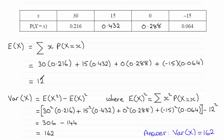And obviously, E(X), when you square it, when you square 12, that's 144. And so 306 take away 144 turns out to be 162.